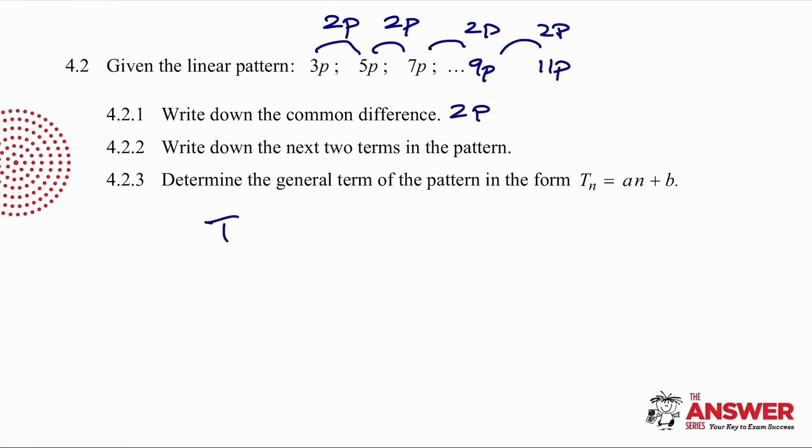And then to generate our terms, we are going to have a complicated coefficient of 2p in front of n plus b. Now, when we substitute 1 to achieve a result of 3p, we are going to get 2p plus b. So b simply has to equal p. So Tn is equal to 2pn plus p.